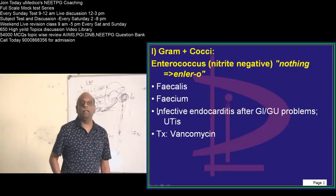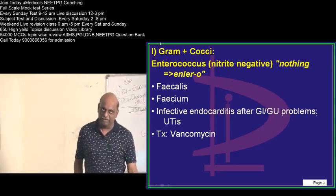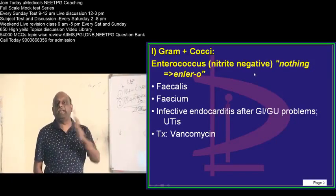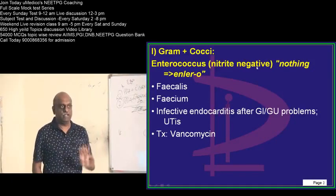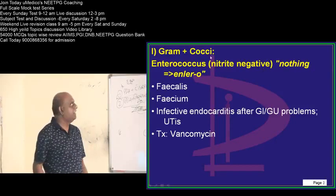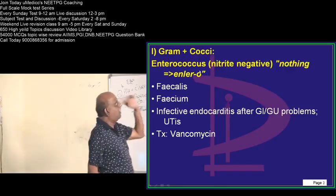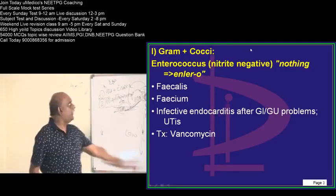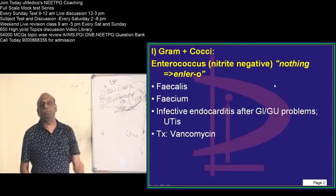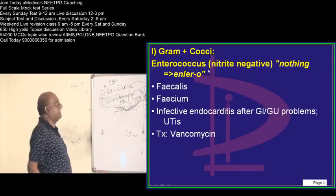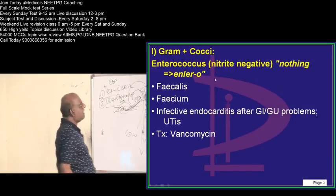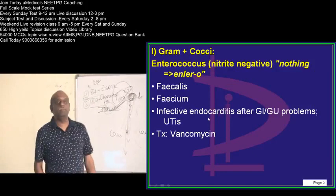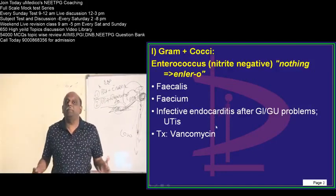Now, gram-positive cocci. Let us talk enterococcus. Enterococcus is nitrite negative — that is the first word you need to remember. 'Enter-O' means nothing can enter, so nitrite is negative. N for nitrite is negative. Enterococcus has got fecalis and faecium. Where is it important?